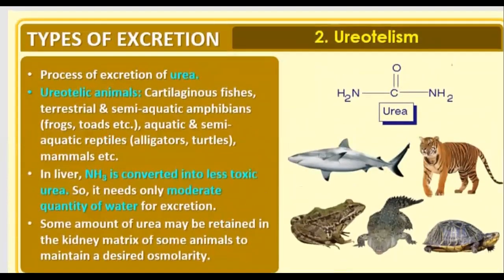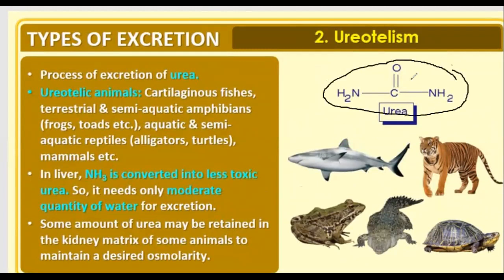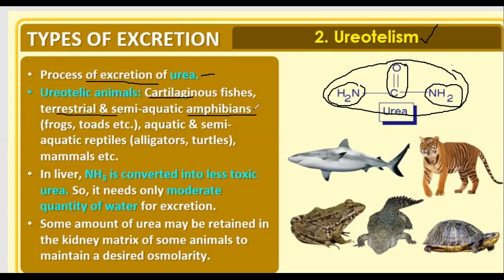Next is Ureotelism. The formula for urea is very important: NH2-CO-NH2. The process of excretion of urea is known as Ureotelism. Ureotellic animals include cartilaginous fishes, and terrestrial and semi-aquatic amphibians. Bony fishes are ammonotelic, while cartilaginous fishes are ureotellic. If all organisms were ureotellic, the toxicity level in water would be high, so this distinction exists.